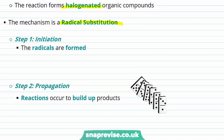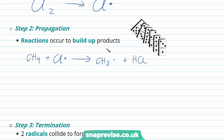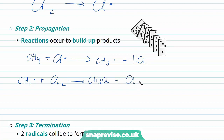The first step is the initiation reaction. Looking at the chlorination of methane: radicals are formed through diatomic chlorine undergoing homolytic fission to form free radicals. The second step is our propagation step, where reactions occur to build up our products. A molecule of CH4 reacts with a chlorine free radical to form a CH3 free radical and hydrogen chloride. That CH3 free radical can then react with a molecule of chlorine to form chloromethane and reform the chlorine radical.